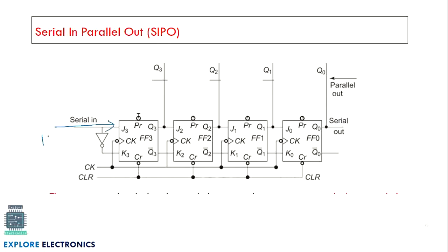In Serial In Parallel Out (SIPO), data is given serially — zero, then one, then zero, then one — one bit per clock cycle. Once all four flip-flops are loaded, we can read out all outputs simultaneously from each flip-flop. This reduces the clock cycle requirement for reading, making SIPO faster in reading the data.